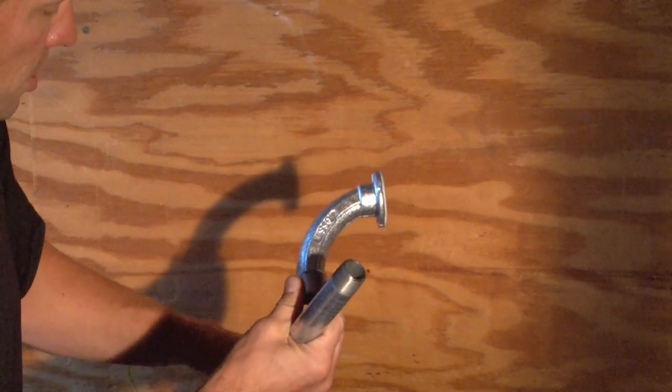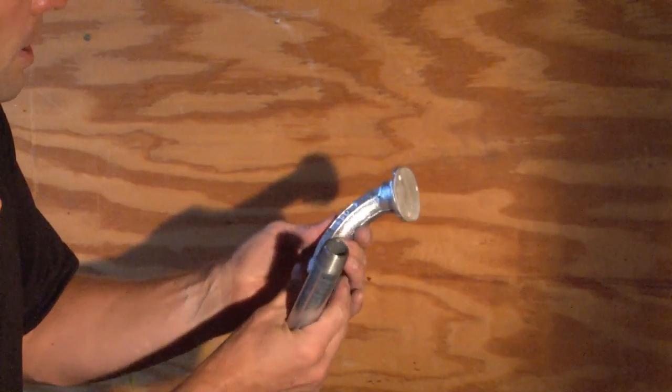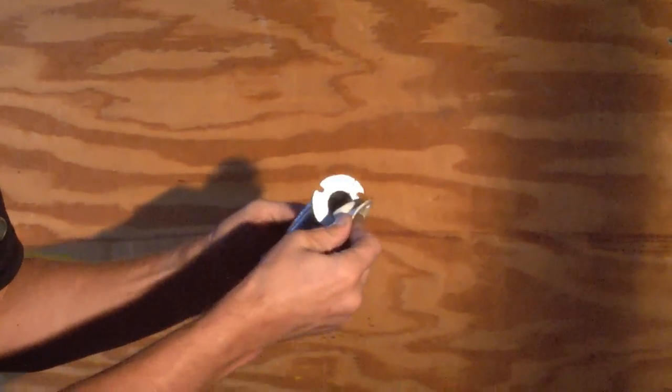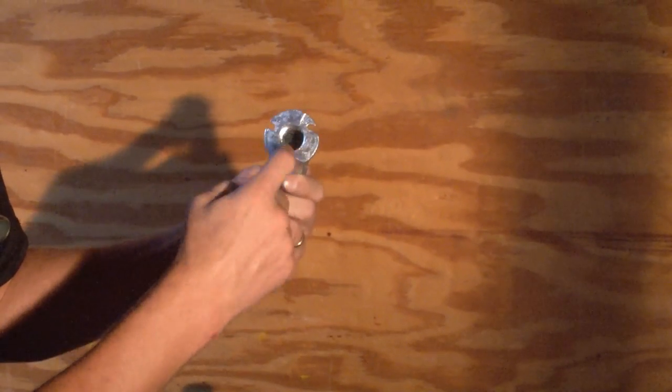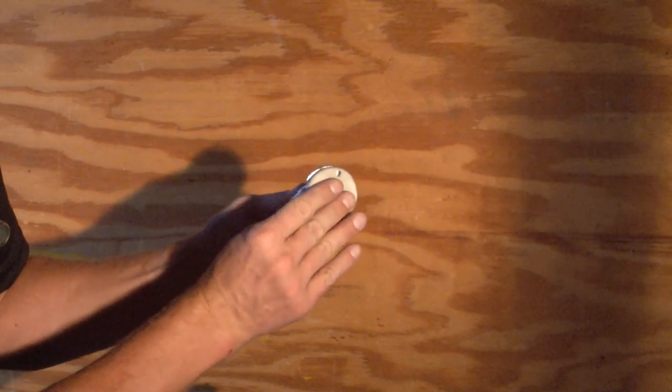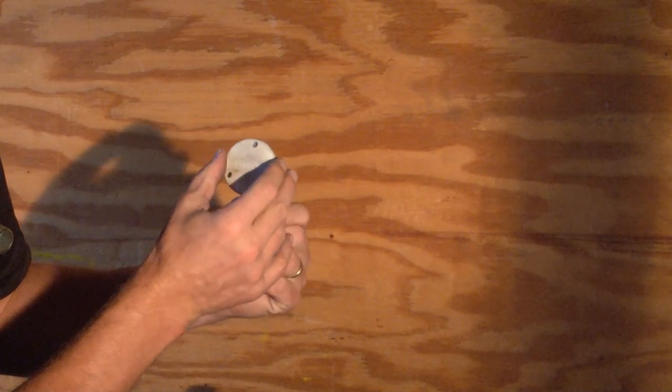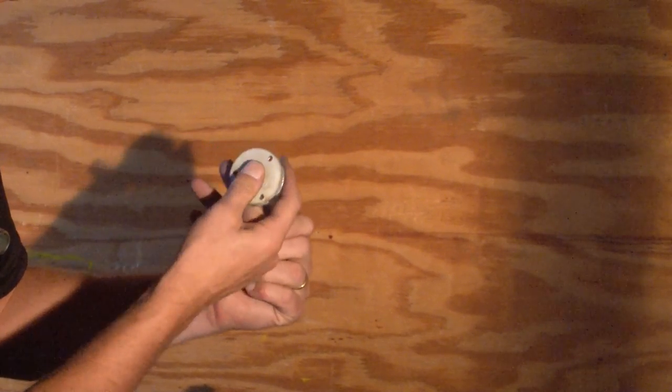When you need a 90-degree turn, the product works quite simply. A rubber gasket covers the female threads that will be on the inside or outside of the poured concrete wall.